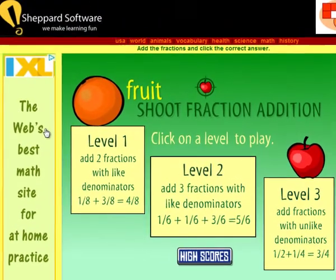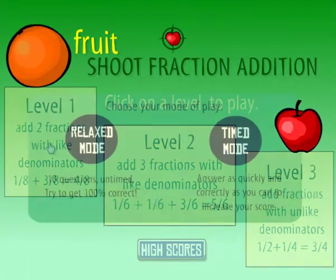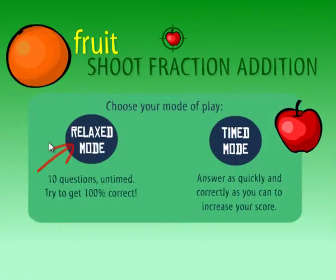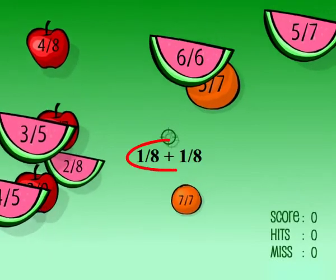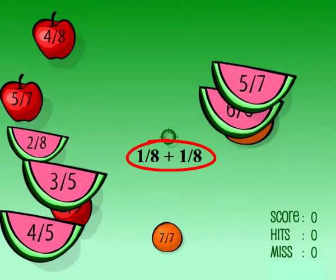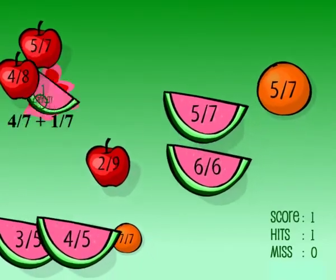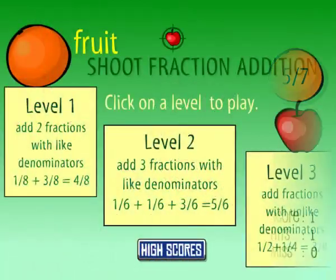Now you're ready to play your next game, Fruit Shoot Fraction Edition, at ShepardSoftware.com. Start with level one. Practice in relaxed mode, then play against the clock and go for a high score. Just watch the cursor for a question. In this case, one-eighth plus one-eighth. One plus one is two, so I click on two-eighths and score.